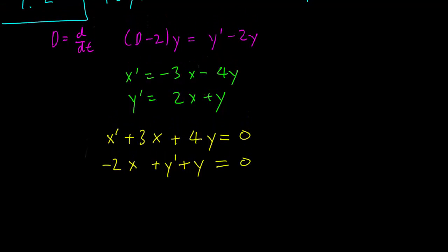So this time we can use our D notation. This is D plus 3 times x, which is x prime plus 3x, plus 4y equals 0.